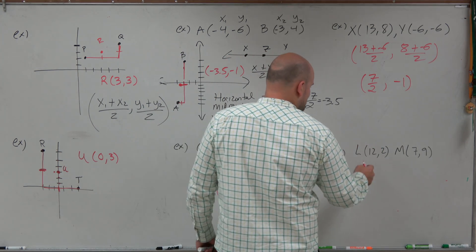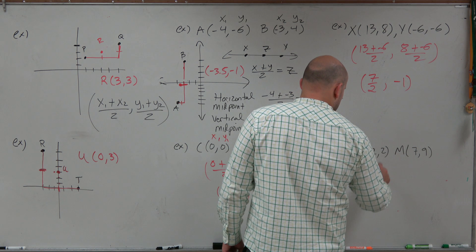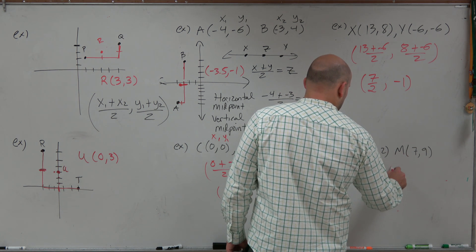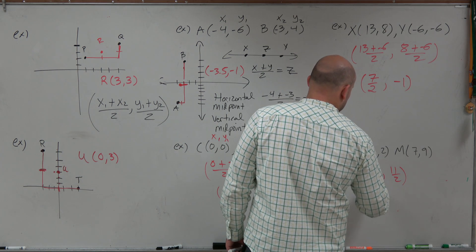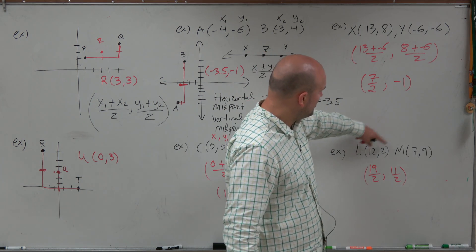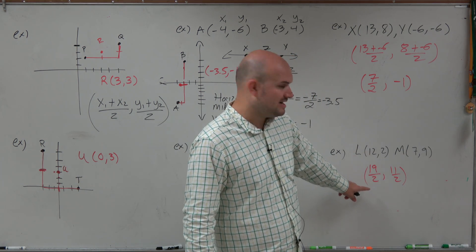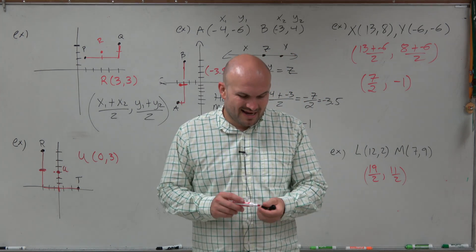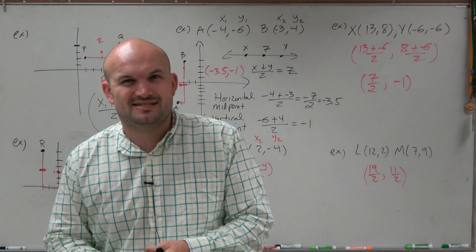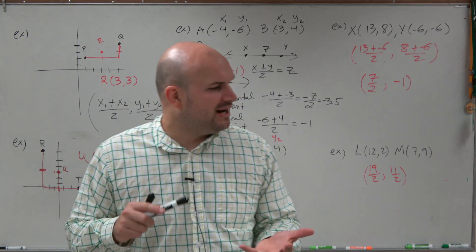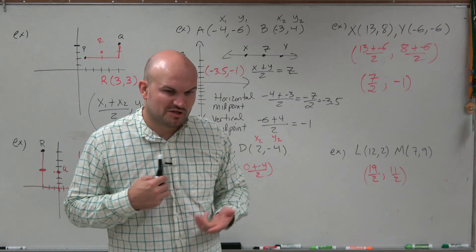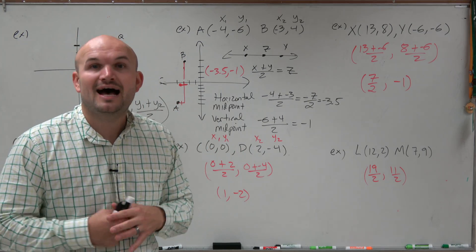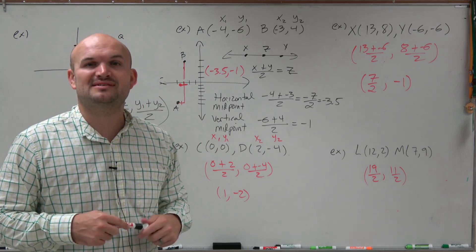Last but not least: 12 plus 7 is 19, divided by 2, gives 19 halves. And 2 plus 9 is 11, divided by 2, gives 11 halves. The only thing that can get a little tricky is adding fractions and decimals. But I just want to make sure you understand how to find the midpoint between two points. Thanks.